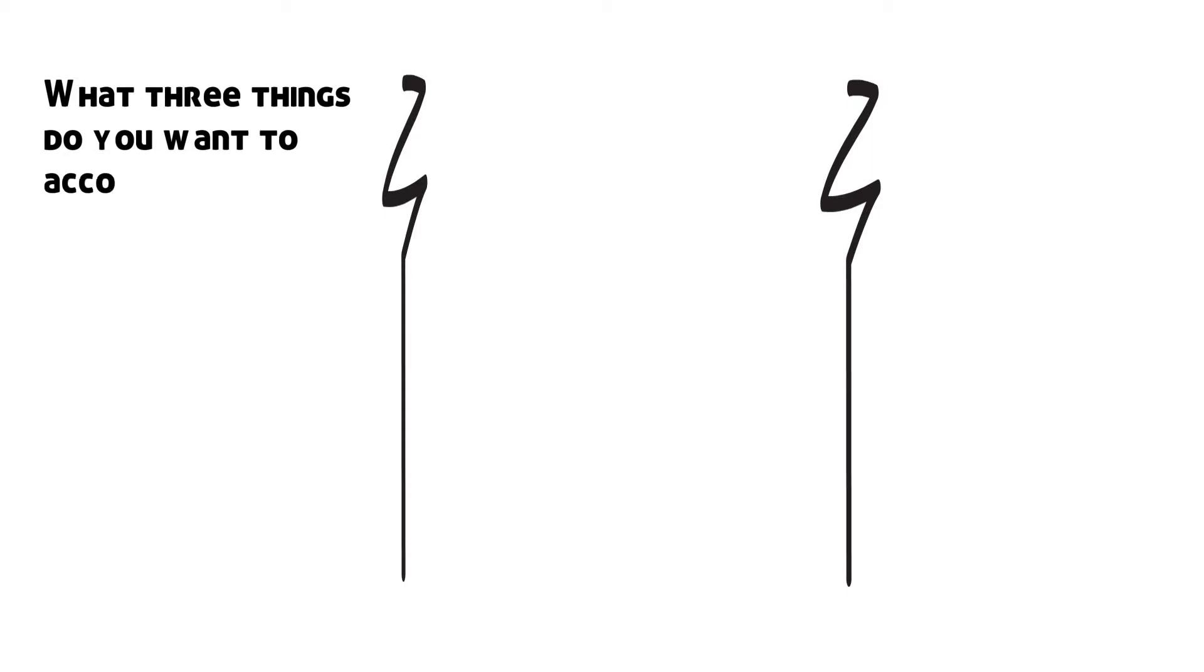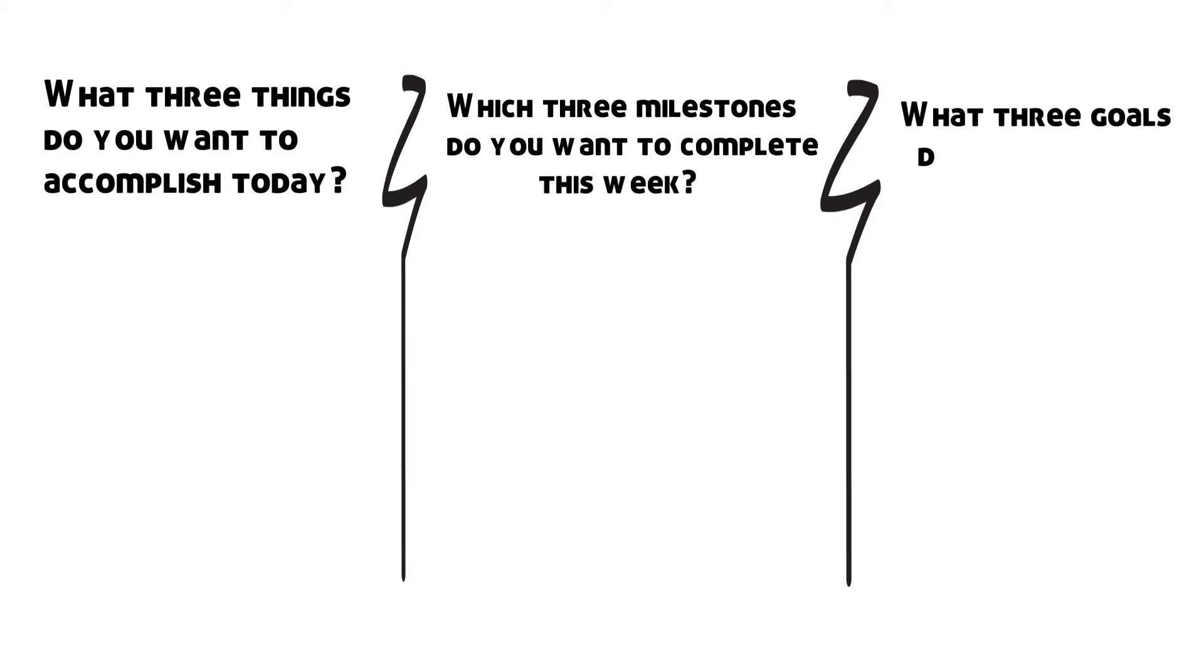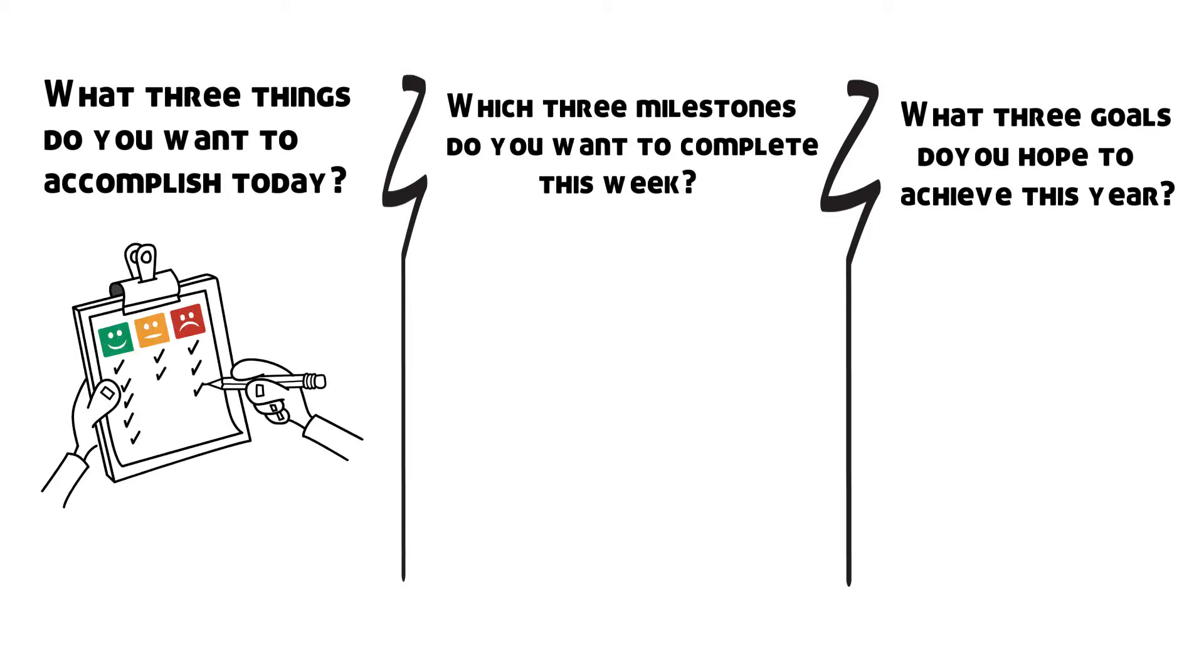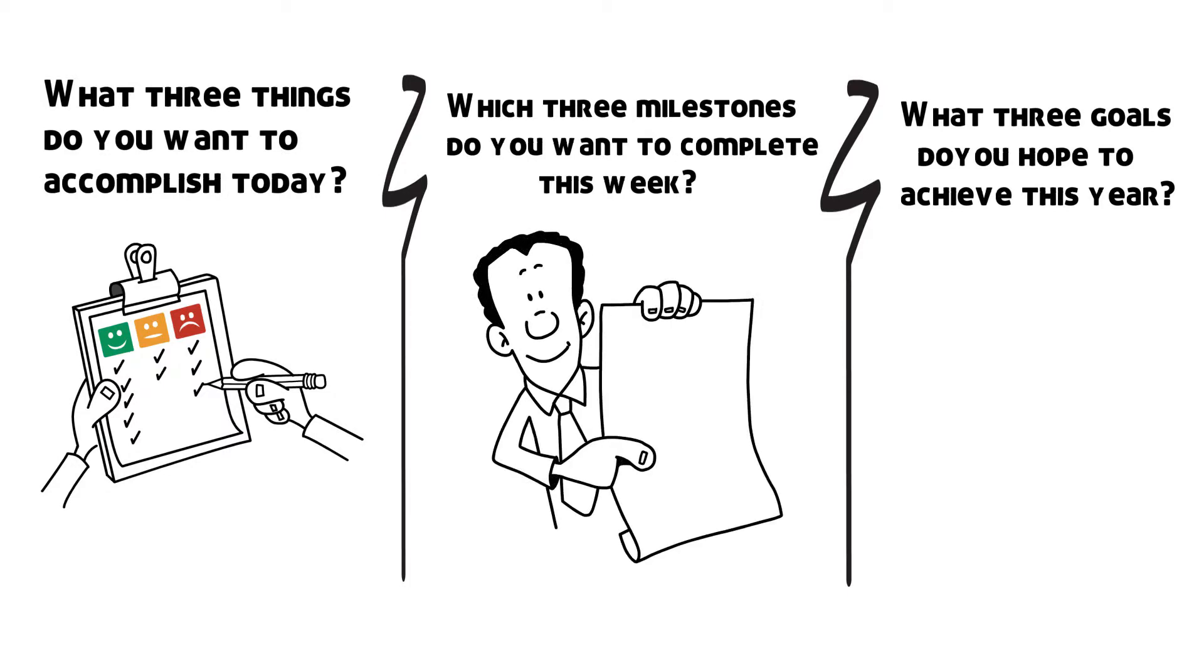What three things do you want to accomplish today? Which three milestones do you want to complete this week? What three goals do you hope to achieve this year? Answer the first question on a daily basis to make sure what you do align with your weekly goals. This will also help check how your weekly target relates to the big picture.